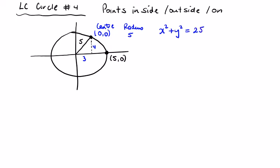Let's look at the point (3,4), which will be this point here. We're going to have 3² + 4² = 25. 9 + 16 = 25, 25 = 25.